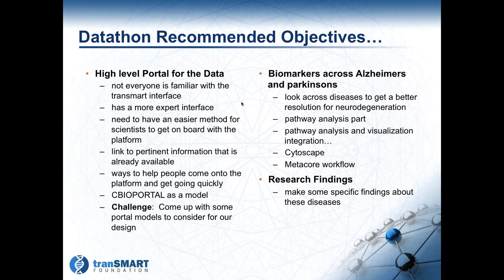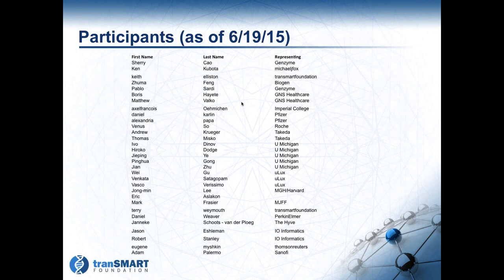The second objective is focused on biomarkers across Alzheimer's and Parkinson's diseases — that is, to look across these diseases having them in the same analytical system, the same platform, with the same kinds of data for the first time. How can we look across these to see what's common, what's different, what's unique? This includes pathway analysis, visualization, and integration — working with things like Cytoscape and the MetaCore workflow that has been built into the TransMart platform. We're looking for some really interesting findings across Alzheimer's and Parkinson's.